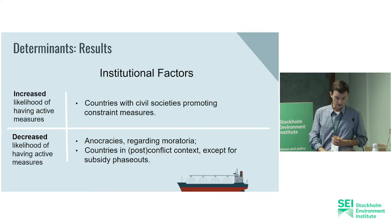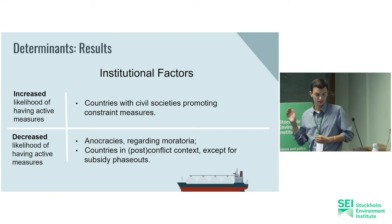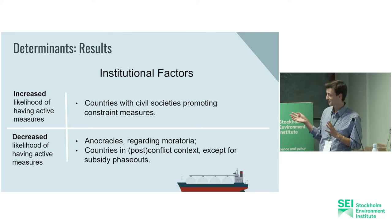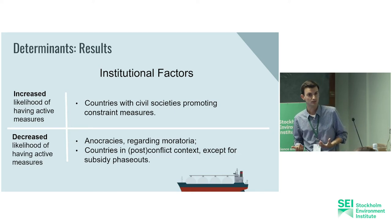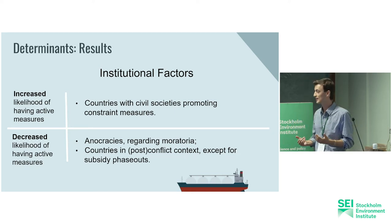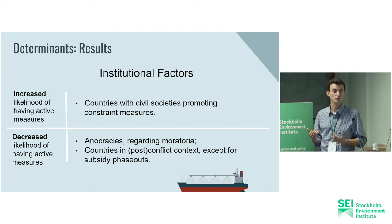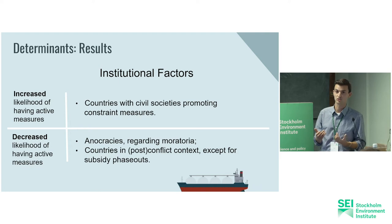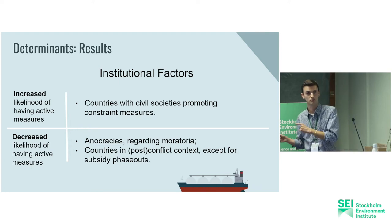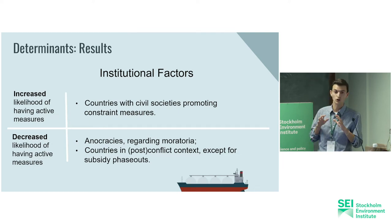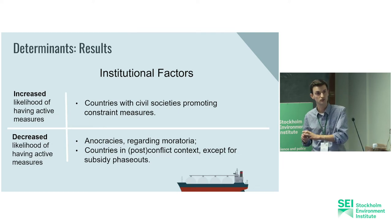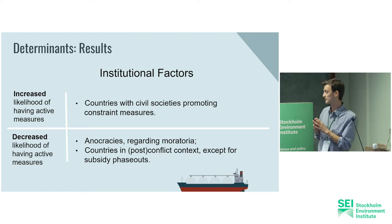In terms of our findings: countries with an active civil society that promotes constraint measures are more likely to have an active measure. On the flip side, anocracy — imperfect or totalitarian democracies — are less likely to have active measures when it comes to moratoria. Similarly, countries in current or post-conflict contexts are also less likely to have active measures, though this is not the case for subsidy phase-outs. There is also weaker evidence that increasing levels of democracy lead to increasing likelihood of having an active measure.